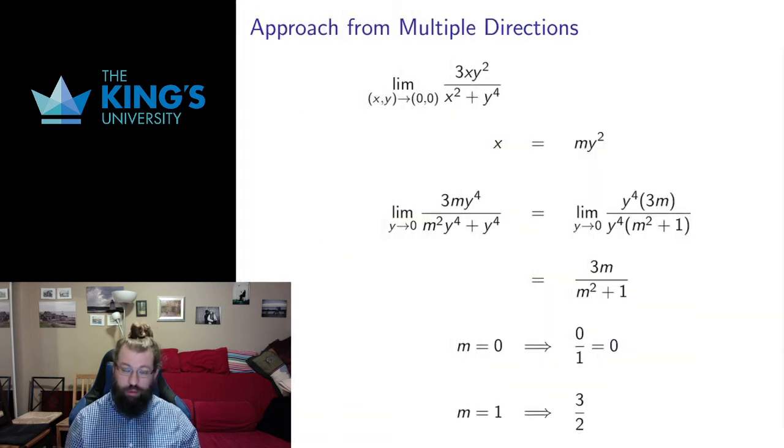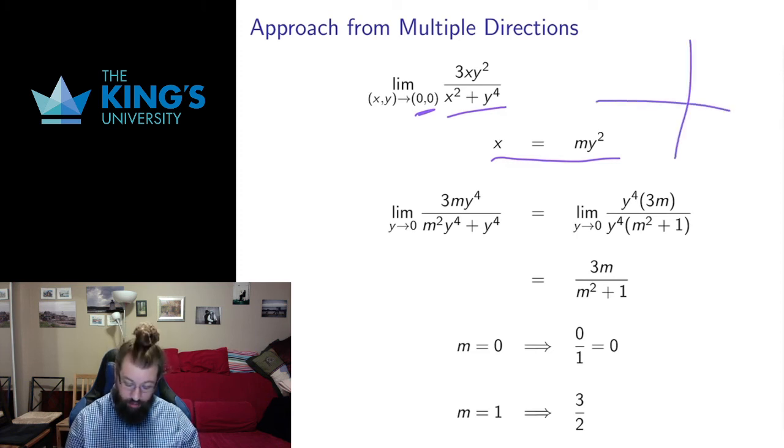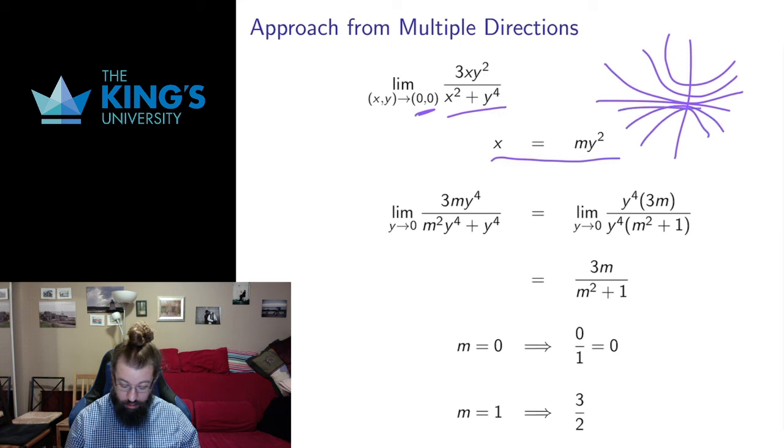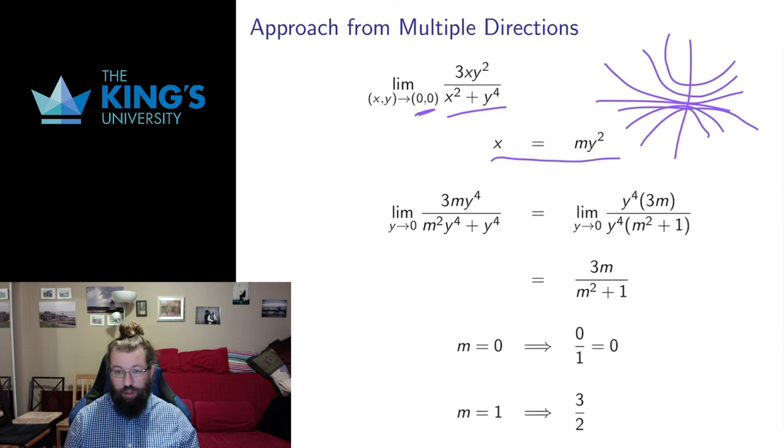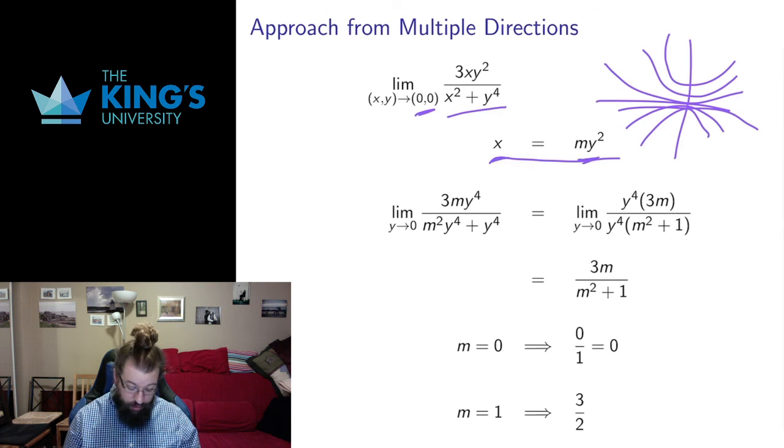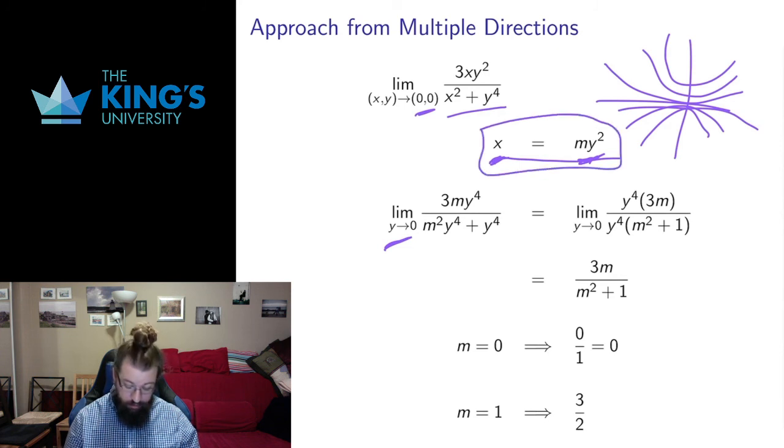Let me do another example of doing this. Here's another multivariable limit in R^2 approaching the origin. Here I'm going to approach, instead of along straight lines, along parabolic lines. I'm going to approach along x equals my squared. Depending where m is positive, I can approach along certain parabolic lines. If m is negative, I'm going to approach along different parabolic lines. I can approach along any paths I want, so parabolic paths are perfectly reasonable. This lets me replace x with my squared, and as y goes to 0, then x is going to go to 0. This lets me turn this into a single variable limit.